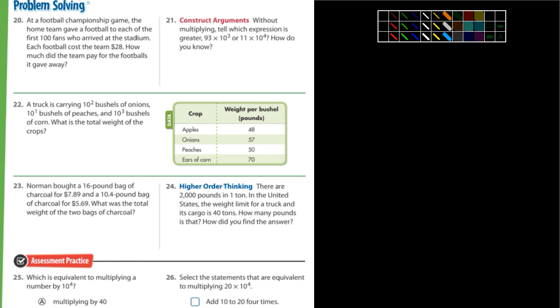Number 20 says at a football championship game, the home team gave a football to each of the first hundred fans who arrived at the stadium. Each football cost the team $28. How much did the team pay for the footballs they gave away? Miss Jennings, how would you set up number 20? Tell me the equation you would use. 28 times 100. Perfect. Make sure your answer has a dollar sign because we're talking about money.